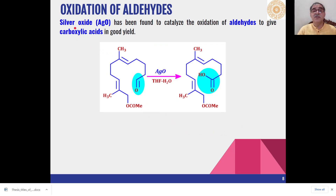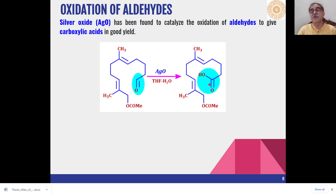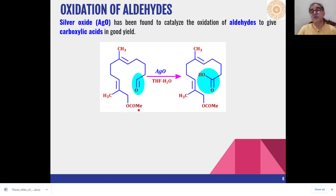Aldehydes can be oxidized to carboxylic acids when silver oxide is used in THF and water. Basically, oxidation of the aldehydic group takes place to give the carboxylic acid. This reaction is also chemoselective — other functional groups like carbon-carbon double bonds and ester moieties present in the molecule are not affected; only oxidation of the aldehydic carbonyl group takes place to give carboxylic acid.